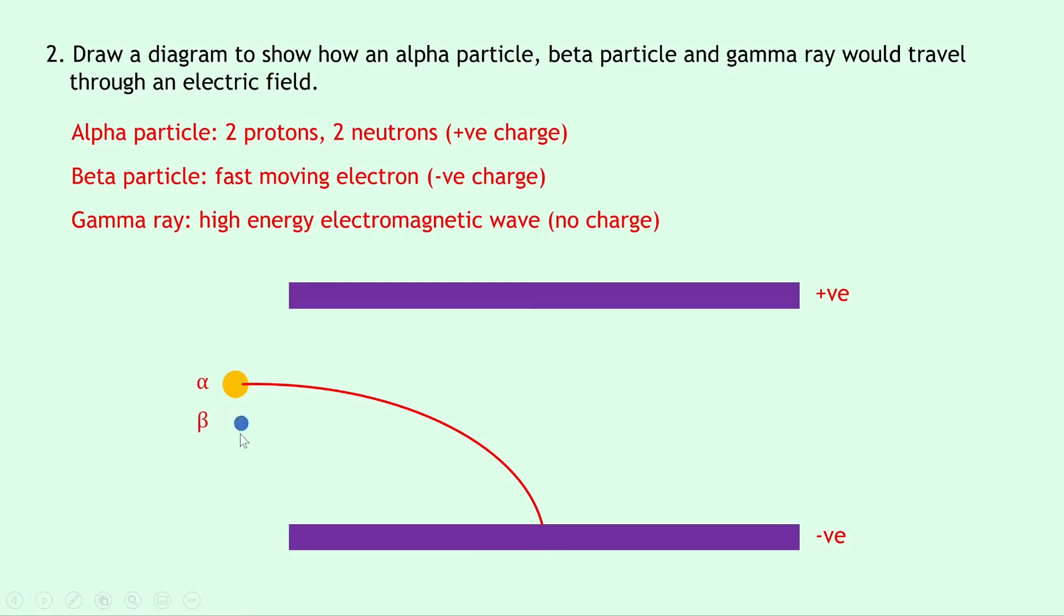Next we have the beta particle which is this little blue dot so it's smaller because it's an electron and it's negatively charged. So this time because the beta particle is negatively charged it will travel in a path that looks like this. Notice how it's moving up the way towards the positively charged plate and that's because it's being repelled away from the negatively charged plate and attracted towards the positively charged plate.